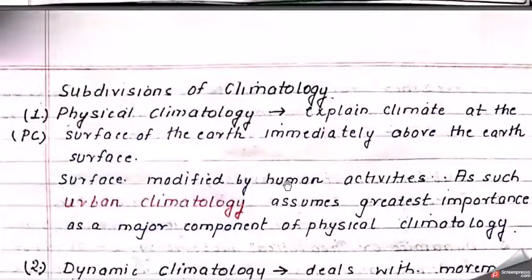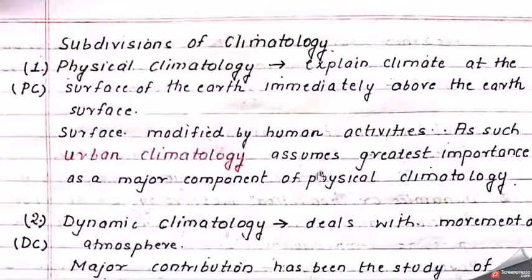The subdivisions of climatology: the first one is physical climatology. It explains the climate at the surface of the earth, dealing mainly with the troposphere and stratosphere. Since the surface is modified by human activities like agriculture, industries, and pollution, urban climatology — the study of how urban areas affect the climate — assumes the greatest importance and is a major component of physical climatology.